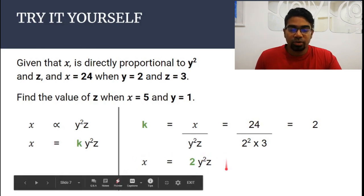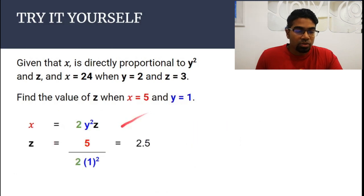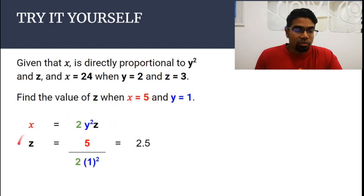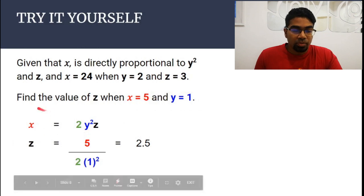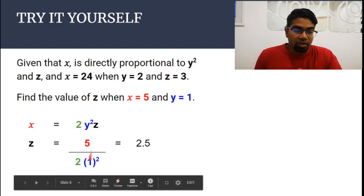This is the relationship we are looking for. Now we can solve other questions. Find the value of z when x is 5 and y is 1. We use the equation we just found, substitute the values of x and y that are given, then rearrange to make z the subject. Substituting x = 5 and y = 1, the answer we should get is 2.5.